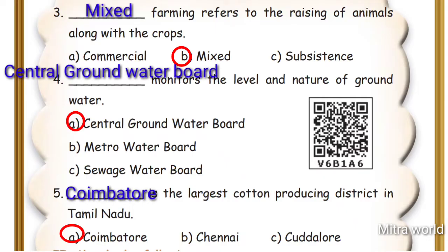Question 4: ___ monitors the level and nature of groundwater. Options are: Central Groundwater Board, Metro Water Board, Sewage Water Board. Answer: Central Groundwater Board monitors the level and nature of groundwater.